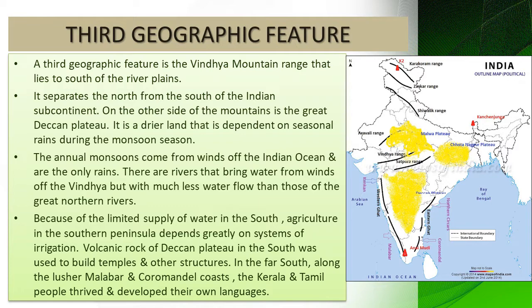The limited water supply in the southern region means agriculture in the southern peninsular region depends on irrigation systems. The volcanic or igneous rock of the Deccan Plateau was used to build temples and other structures. The people of the Malabar and Coromandel coasts — the people of Kerala and Tamil Nadu — made good use of these igneous rocks for different kinds of temple architecture. There are five major languages in south India that evolved there: Malayalam, Kannada, Tamil, Tulu, and others.